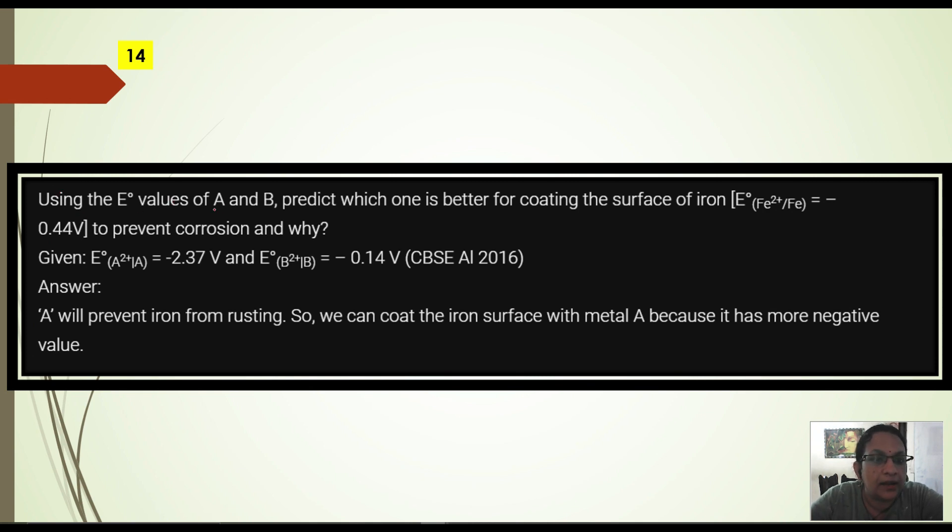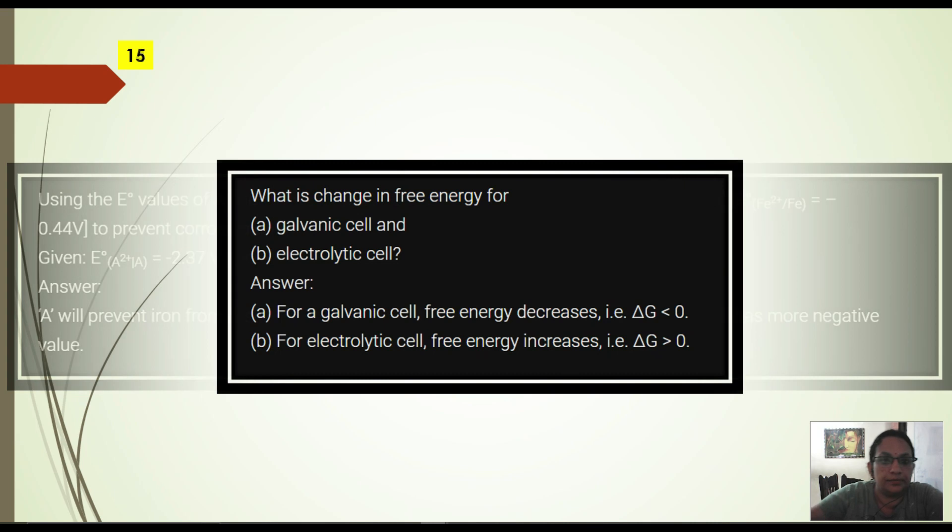Next question. Using the E° values given, values of A and B, predict which one is better to prevent corrosion. E° of Fe2+/Fe given is -0.444. Here E° of A to A+ given is -2.37 volt. And B to B+ is given -0.14 volt. If we have to compare which one is better to prevent corrosion, A is better. A has potential -2 something. Because A will prevent iron from rusting. So we can coat the iron surface with metal A because it is more electronegative value. This value is more negative. That is why.